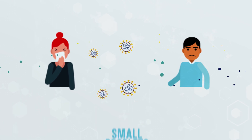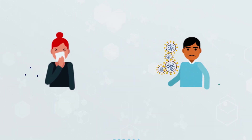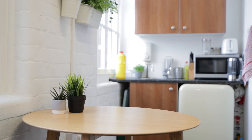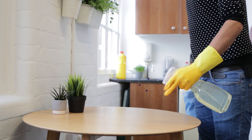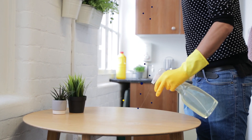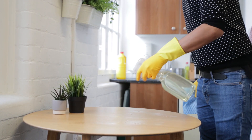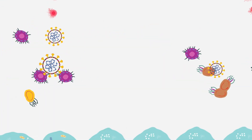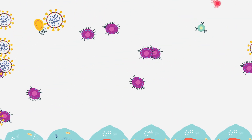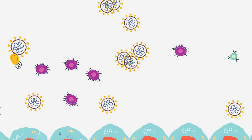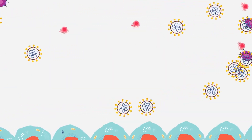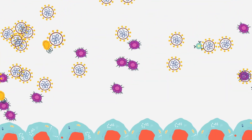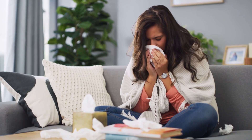A virus is spread when small droplets from the nose or mouth are exhaled when a person coughs, sneezes, or breathes out. These droplets land on objects and surfaces around the person, which can infect other people who may touch them, then touch their eyes, nose, or mouth. When infected, the immune system — the body's defence system — attacks the virus. When the body is overwhelmed by the virus, the immune system does not have enough time to cope, and therefore sickness symptoms occur.